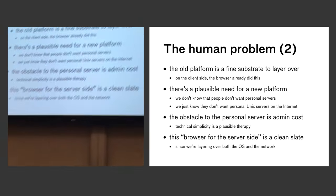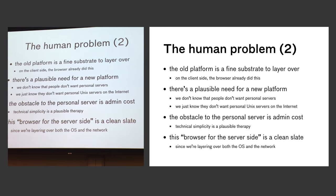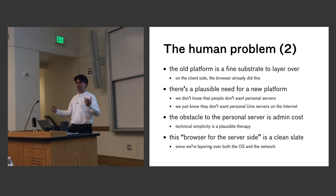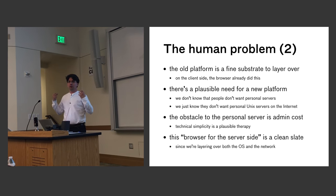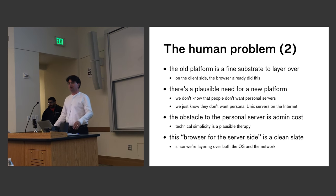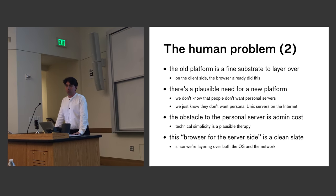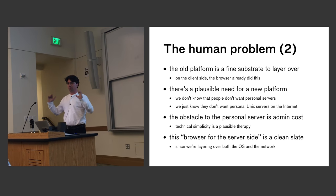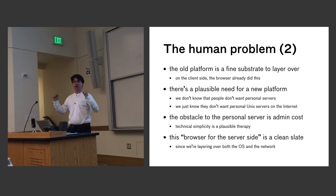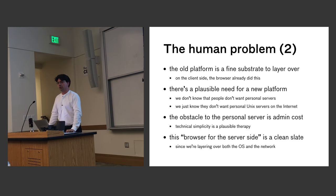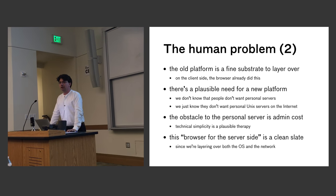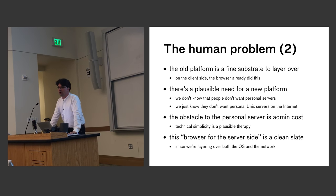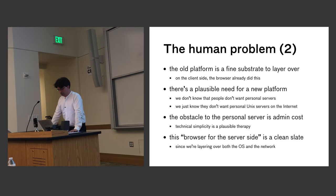There's a way to get out of a problem that isn't fixable, which is to layer over it. The browser already did this on the client side — it basically built a new application layer isolated from the substrate under it that cannot call out in any way, shape, or form. We program to that layer and don't care about the underlying OS. That actually kind of worked great.